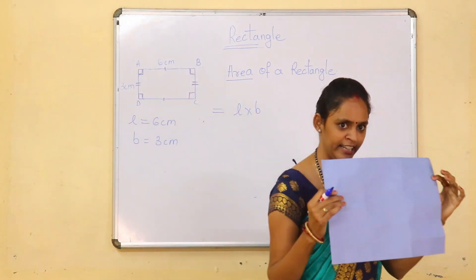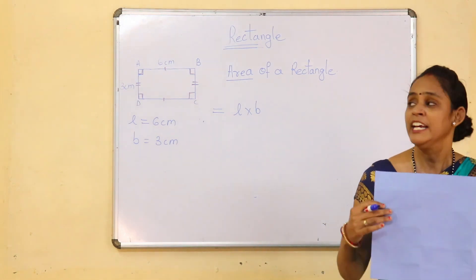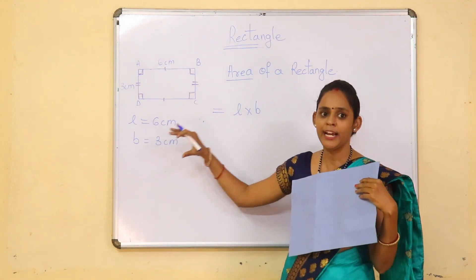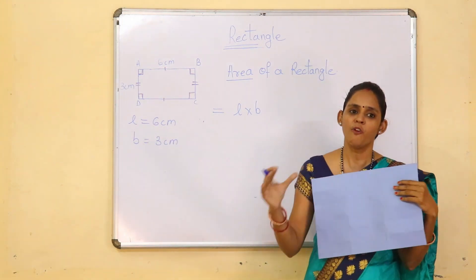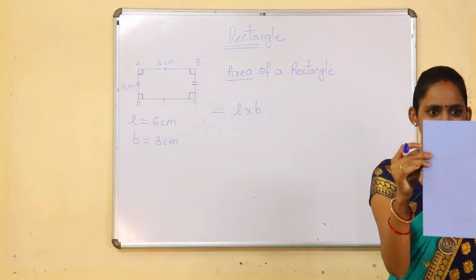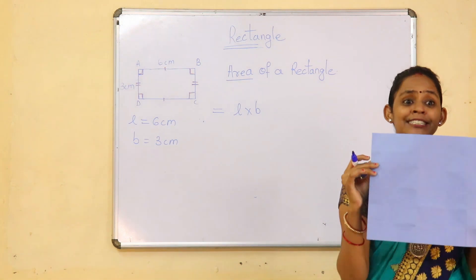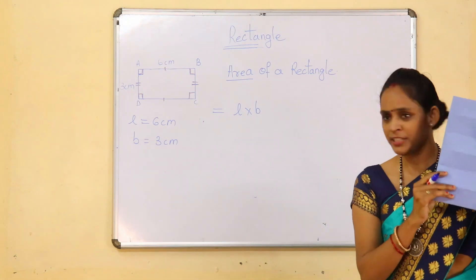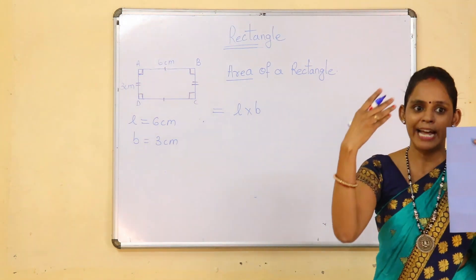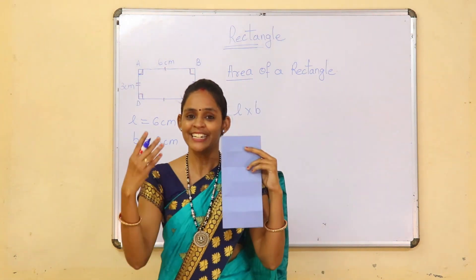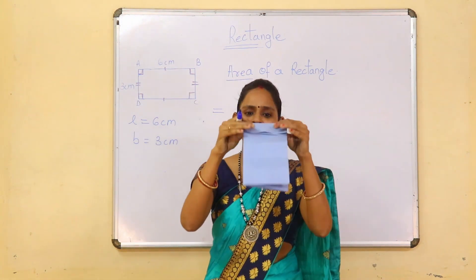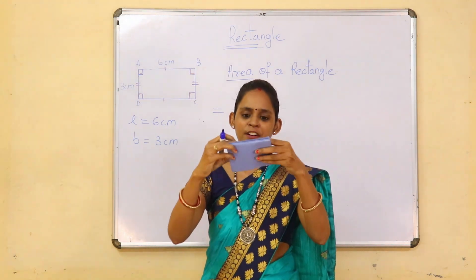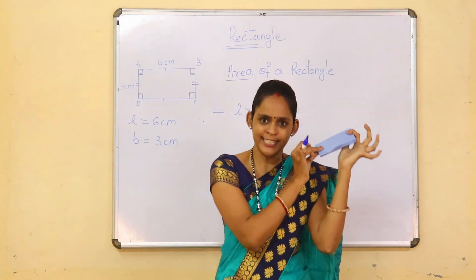Now how do we calculate the area of rectangle? Let's see in a different way using the same example, where we take length as 6 cm and breadth as 3 cm. We have to fold this paper in the breadth direction — that means 3 times. The paper is divided into 3 parts. Now we have to divide the length into 6 parts. So this paper is folded into 6 parts.